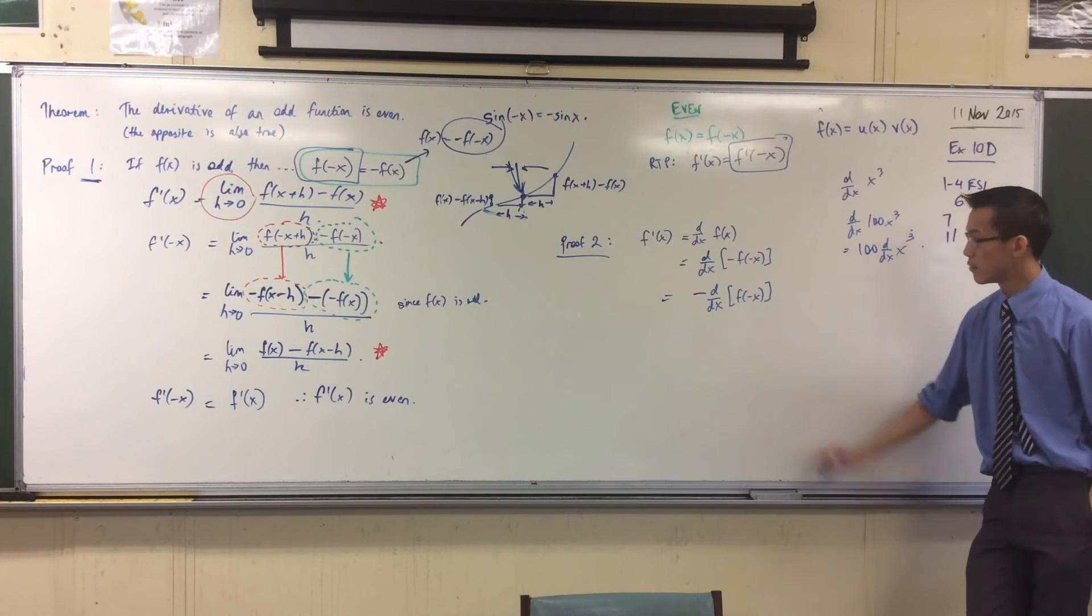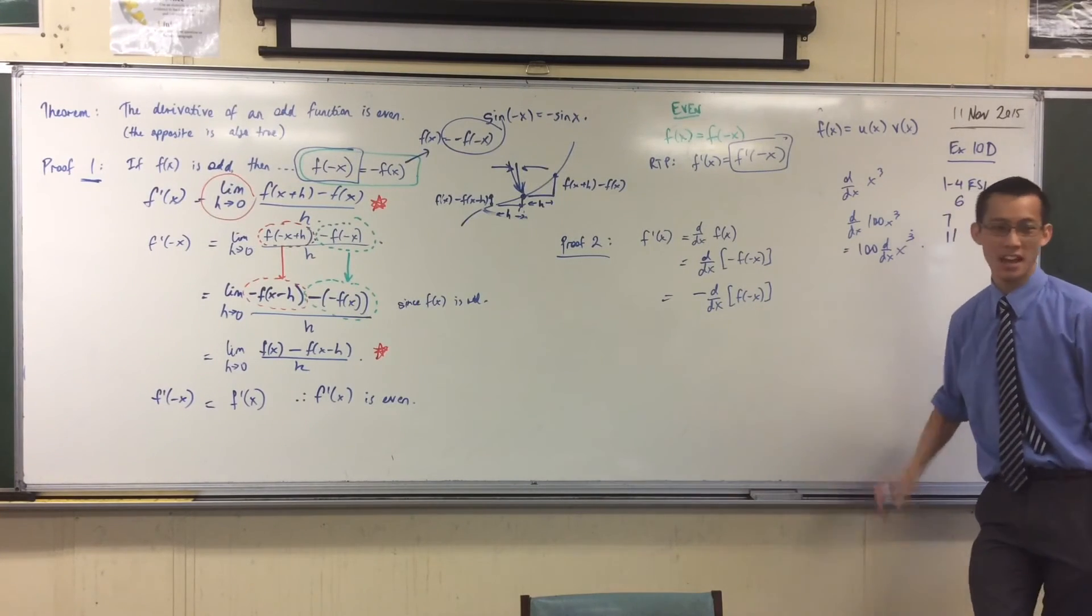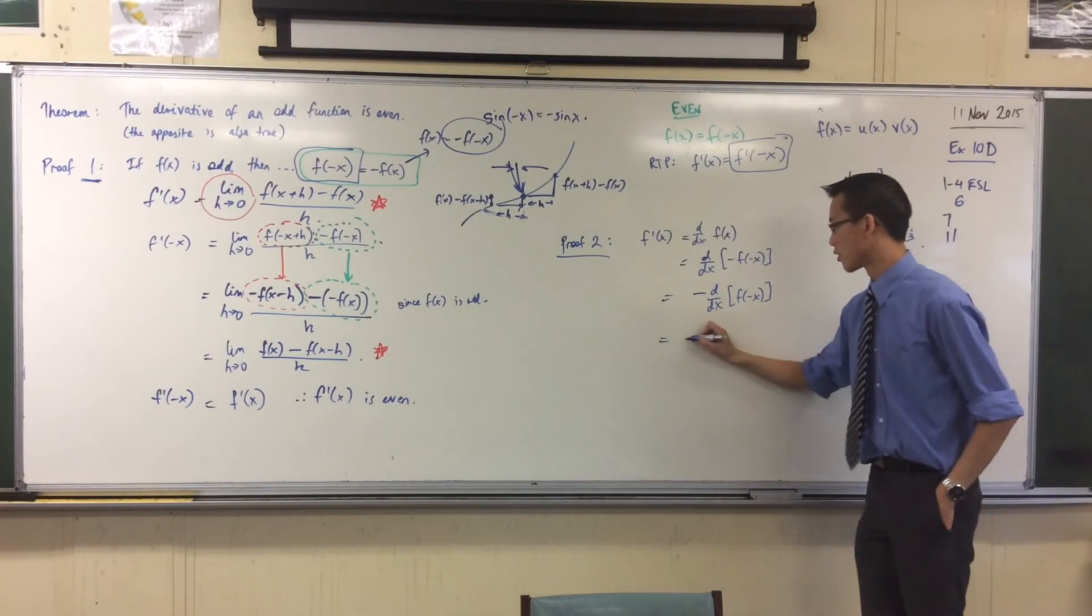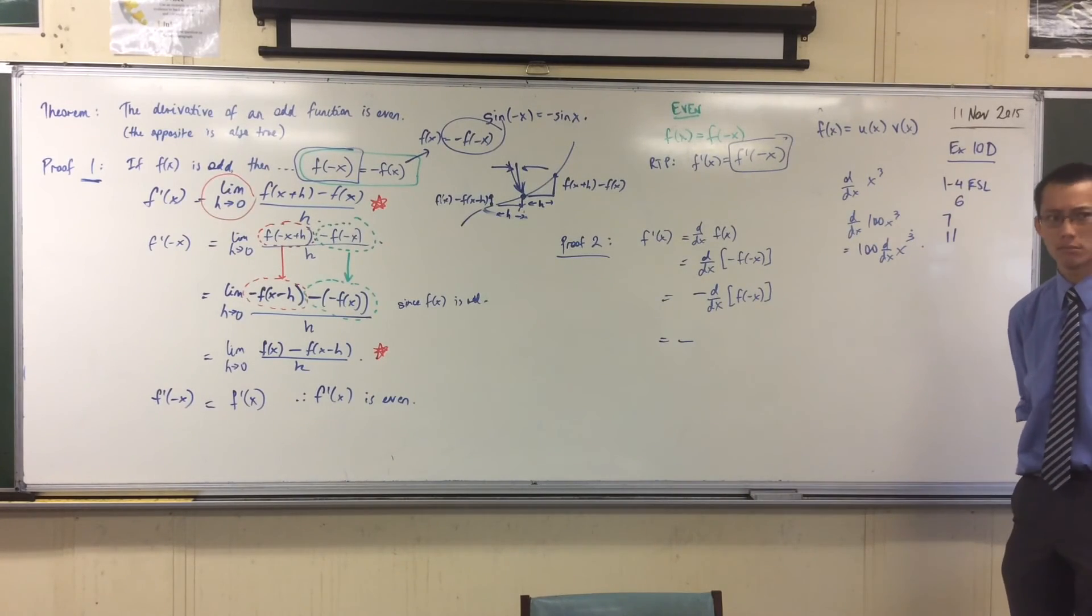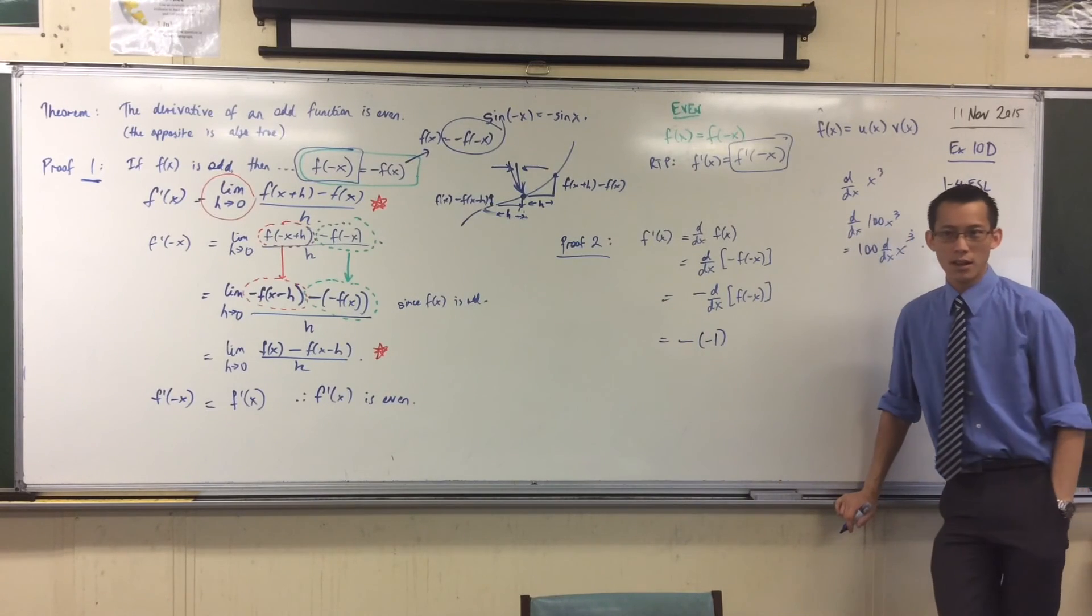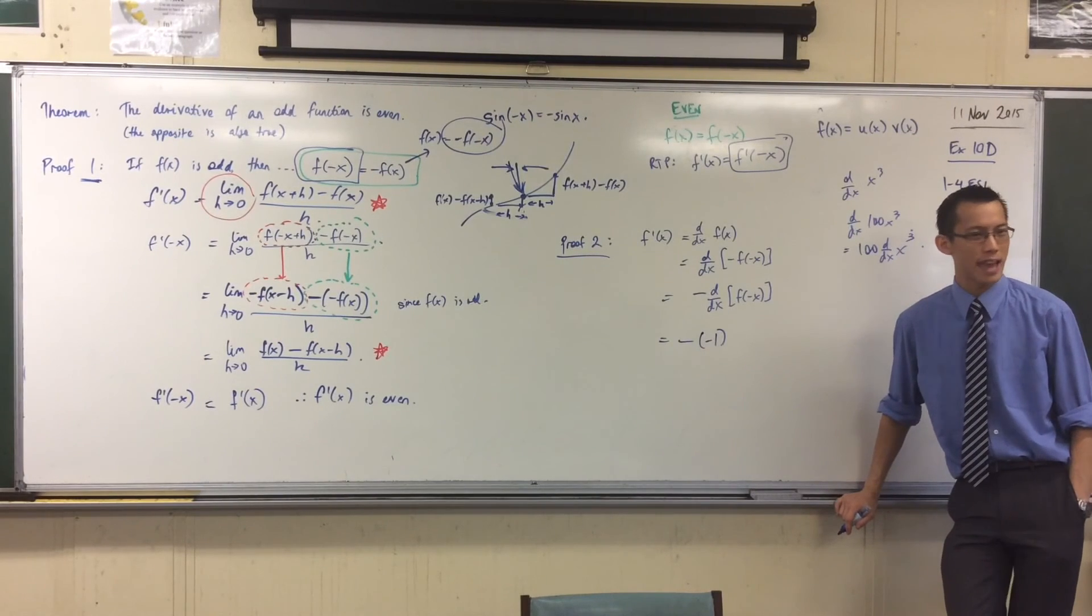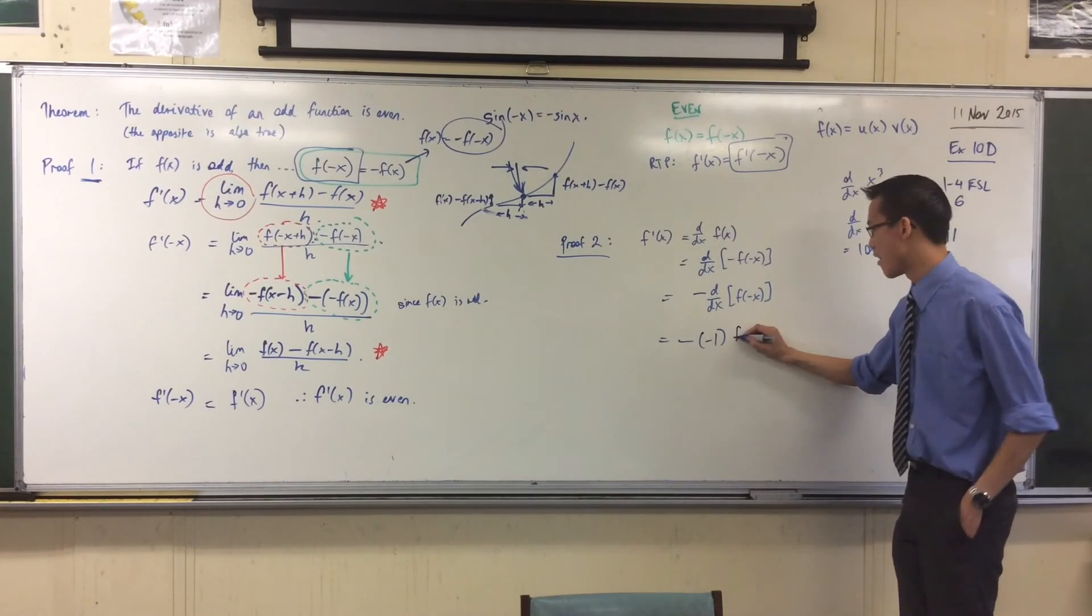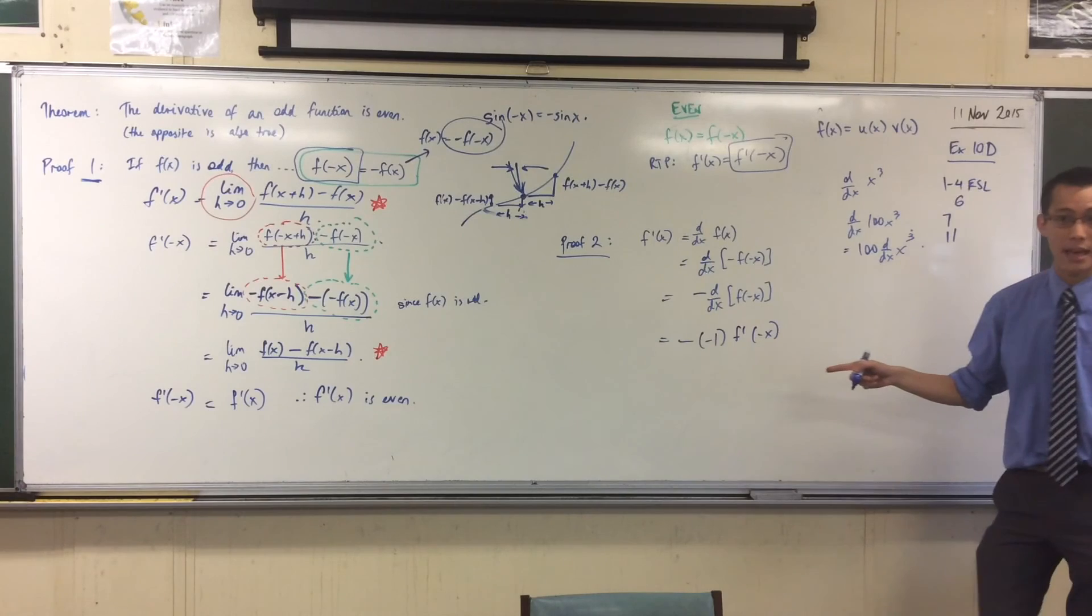And now I'm ready to differentiate. That's a function of a function. So when I do the function of a function, do the inside, and then I do the outside. I've got a minus sign already hanging out the front. What's the derivative of that inside function? It's negative 1. What's the derivative of the outside function? Well, the outside function is f. So therefore its derivative is f dash. I don't know what f is. So it's f dash of minus x. Don't forget it is still minus x.